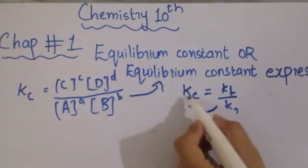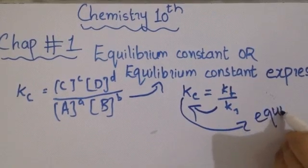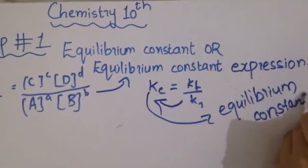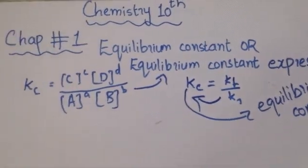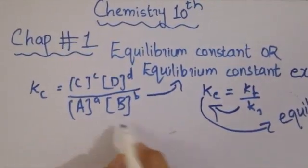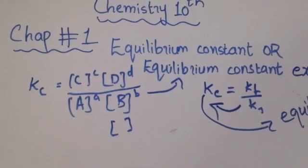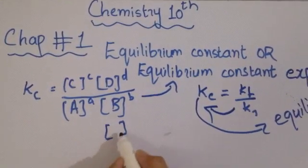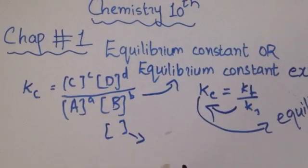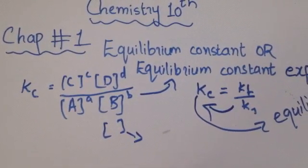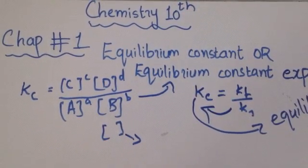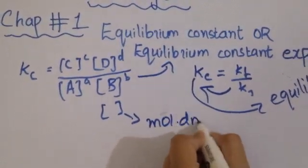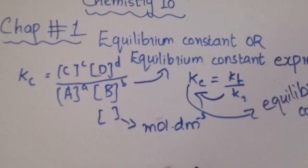This equation indicates that the concentration of chemical species at equilibrium is expressed in mol per decimetre cubed. The square brackets indicate concentration of species C, D, A, and B, which will always be given in mol per decimetre cubed. This is also the unit used.